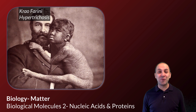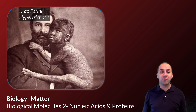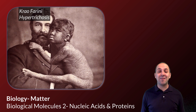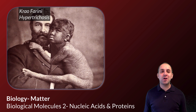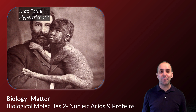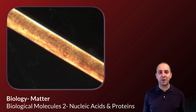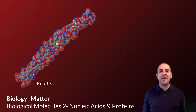Proteins are really cool molecules and they do a lot of really cool things. I thought for the purpose of this one, I would talk to you about Krau Farini, who lived in the 19th century — you see her pictured here. Krau had a condition known as hypertrichosis. You can probably see what the phenotype is in this picture of her with her adopted father. Hypertrichosis is excessive hair growth all over your body. This is one hair magnified, and if we could magnify it further down to the molecular level, we would see that hair is made out of a protein called keratin.